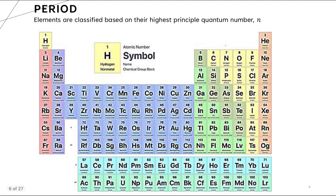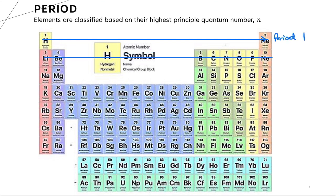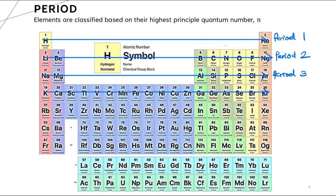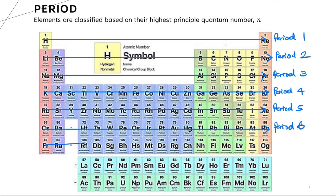Let's take a look one by one at period, block, and also group. The period — in Malay, 'kala' — refers to the horizontal row. We call them period 1, period 2, period 3, period 4, period 5, period 6, and also period 7. There is a total of 7 periods in the periodic table.